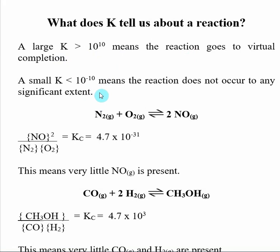Likewise, if we have a small K, say less than 10 to the minus 10th, that means the reaction does not really occur to any significant extent. It means that the reactants really do not turn into products.